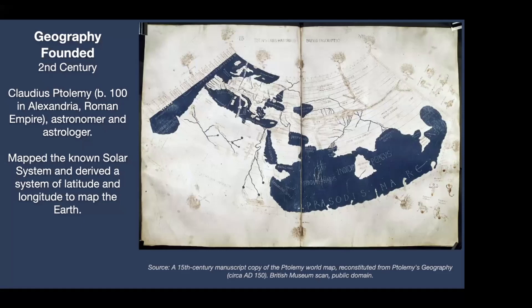Then, fast forward to the second century — Ptolemy, a Roman born in Alexandria, was an astronomer and astrologer. He mapped the known solar system, then derived a system of latitude and longitude to map the Earth — it was the first time. A fascinating manuscript copy of his map still exists. He figured it out because he was a dedicated astrologer who wanted to map exactly where everybody was born, which would tell him their astrological information. You can thank Ptolemy for founding geography because of astrology, which is pretty funny.